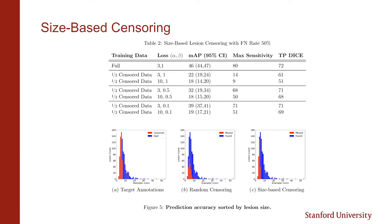Thus, we conclude that using the lopsided bootstrap loss cannot fully abolish size-based biases. We hypothesize that other consistent feature-based biases would also not be solved with the lopsided bootstrap loss.